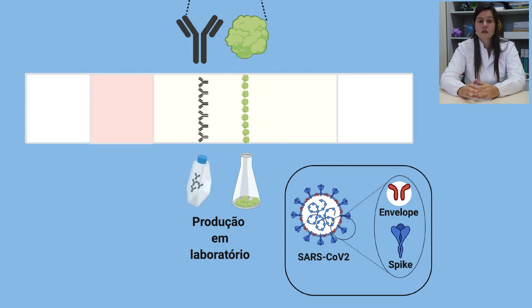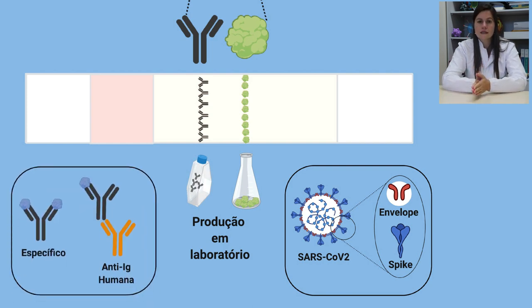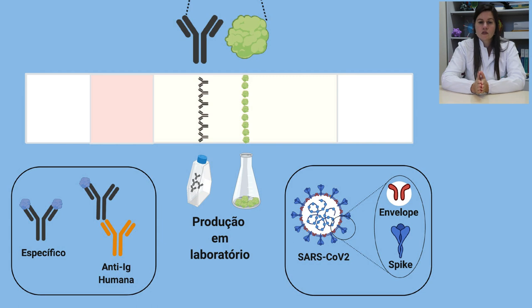Os anticorpos também são produzidos em laboratório utilizando uma técnica chamada de anticorpos monoclonais. Estes podem ser produzidos de forma específica contra um determinado antígeno que se está buscando, ou ainda pode ser produzido um anticorpo anti-imunoglobulina humano, que normalmente são produzidos em outros animais e reconhecem a região conservada das imunoglobulinas humanas.